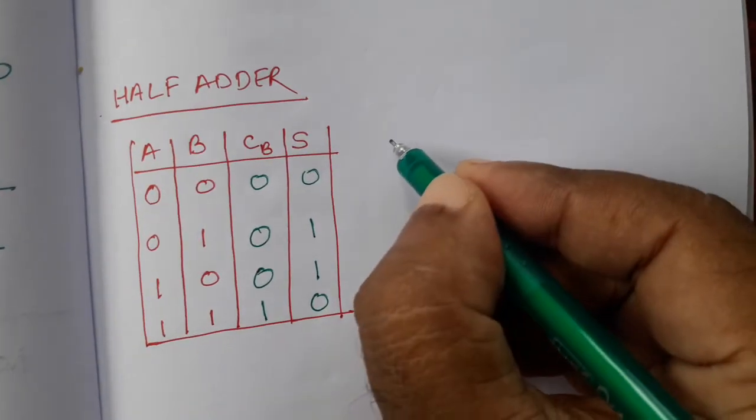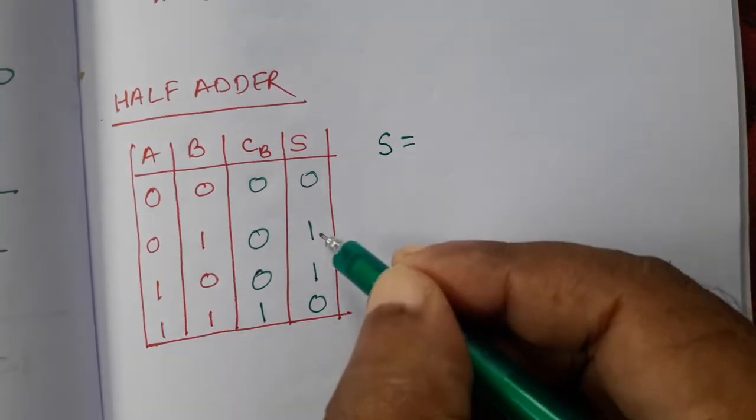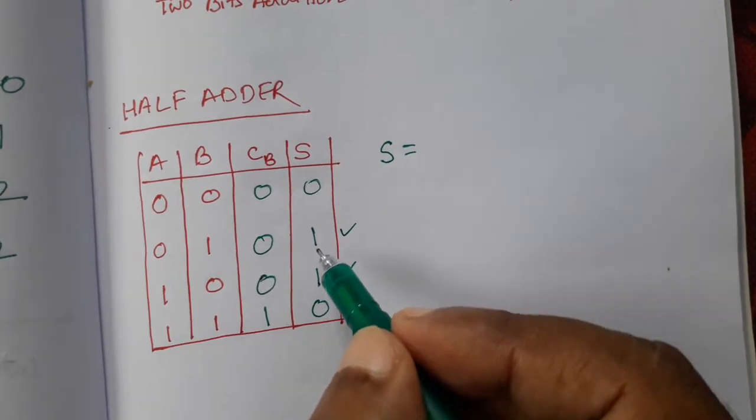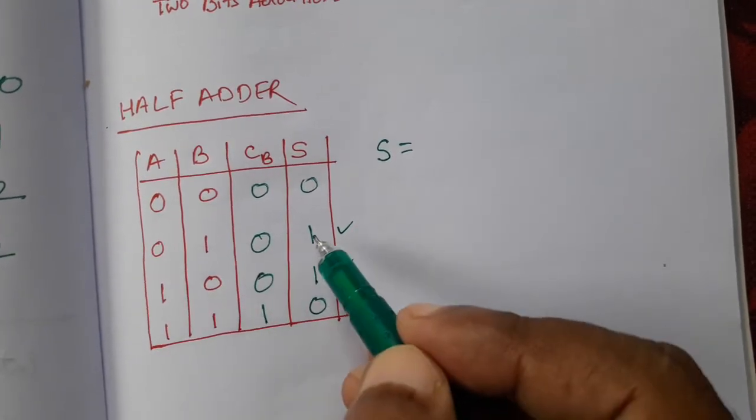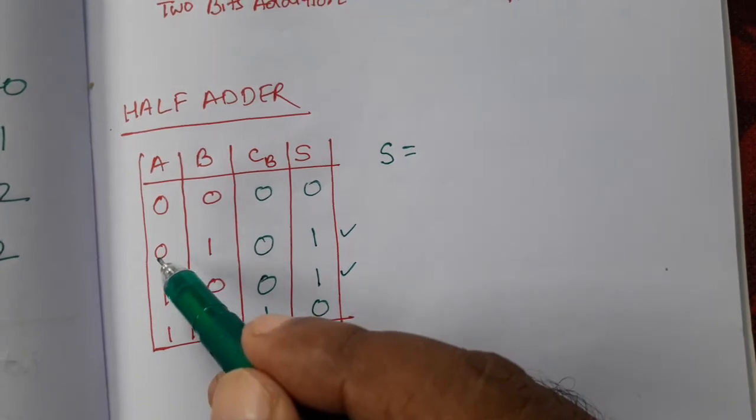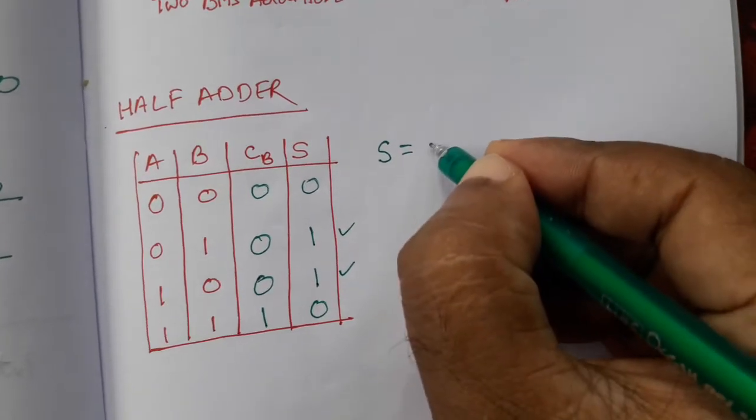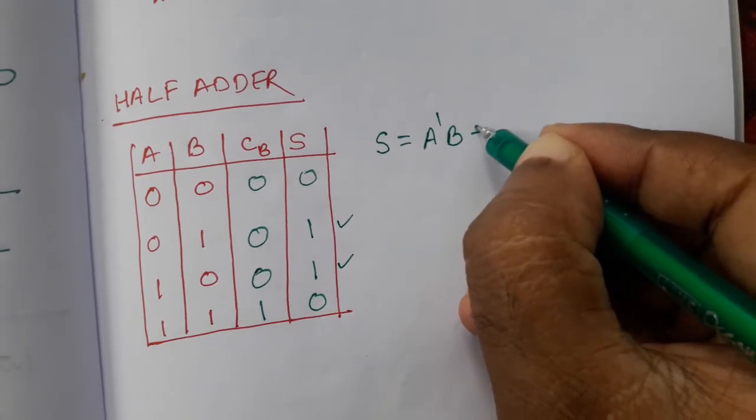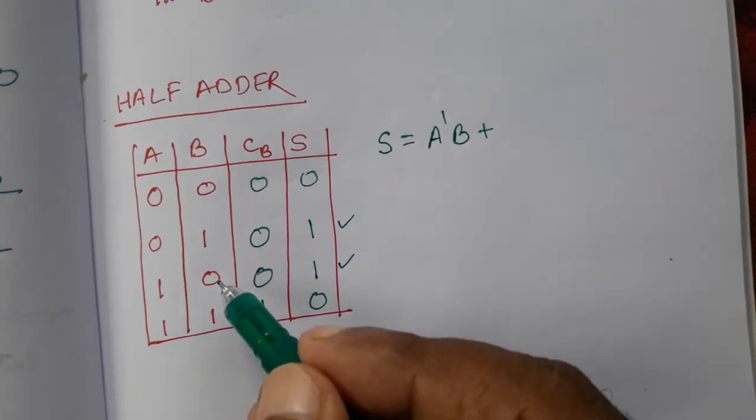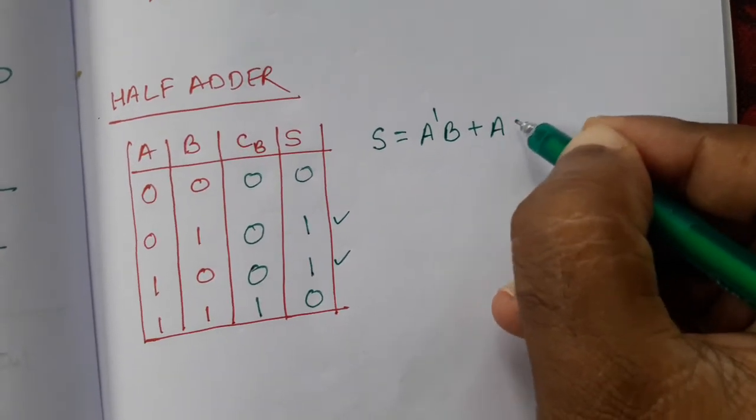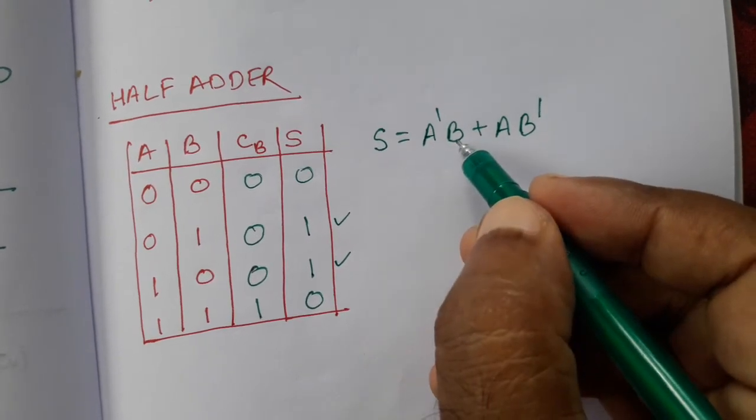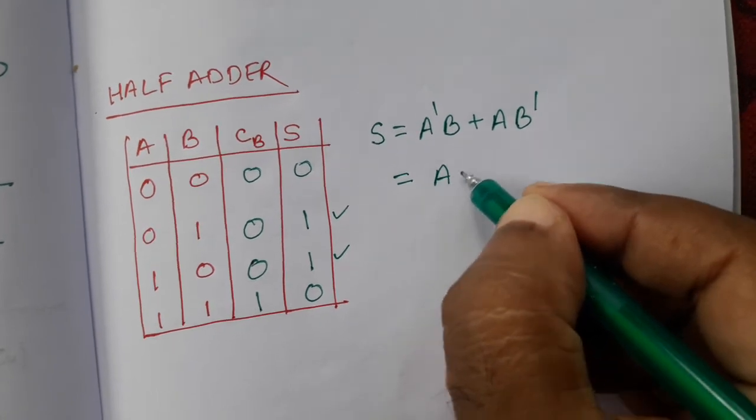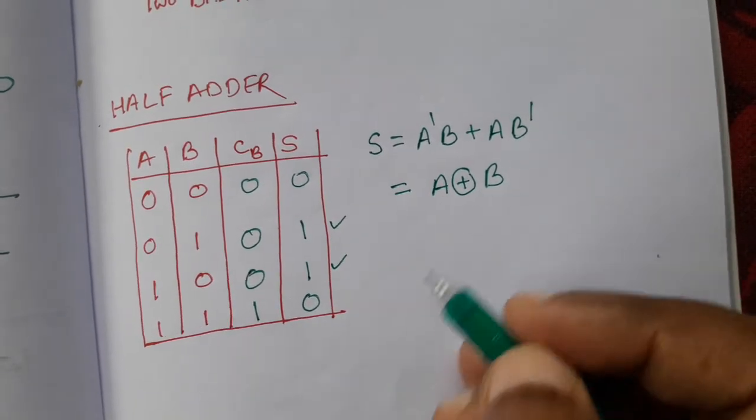Now if we want to write about the sum, for sum we have 2 ones, this one and this one. So the corresponding input values we are having for first one, that is A is 0 and B is 1. Because A is 0, we will write here A dash, and B is 1, so we will write B. Then plus for second one, A is 1 and B is 0, so it will be A and B dash. So A dash B plus A B dash. We know that A dash B plus A B dash is A XOR B.